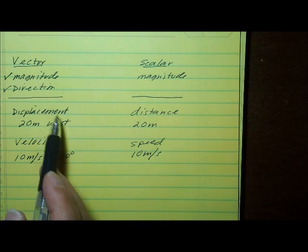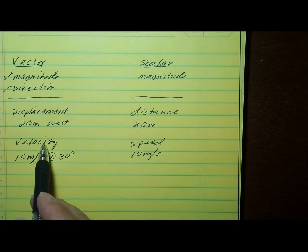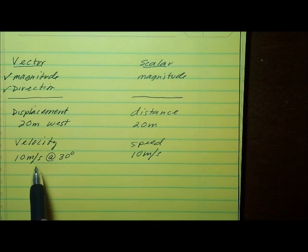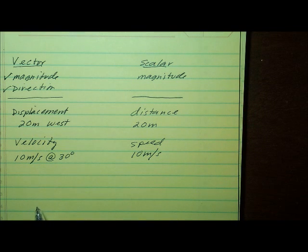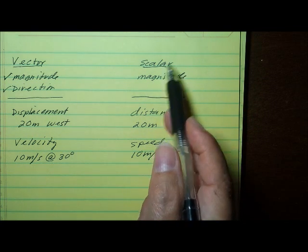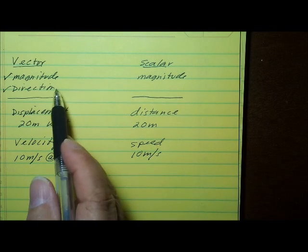Displacement and velocity are vector quantities. And you'll find out that acceleration and forces are also vector quantities. A scalar measurement has only a magnitude, it doesn't have a direction.